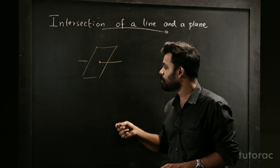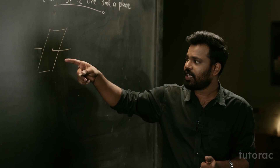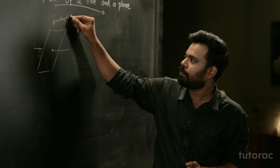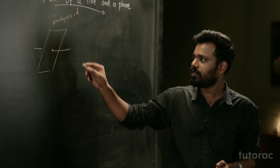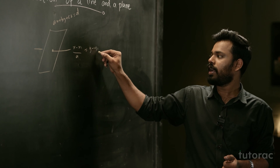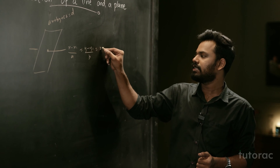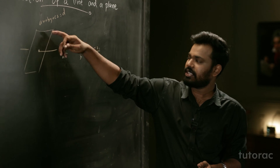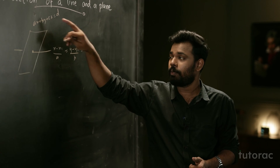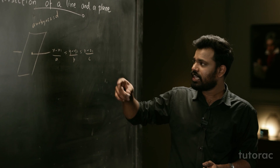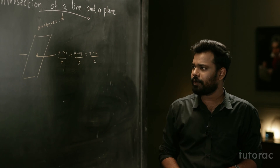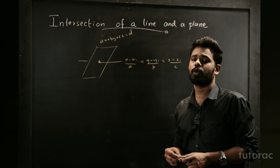Now what is this point? That is what we have to find out. For that we need the equation of the plane — let it be AX plus BY plus CZ equals D — and the equation of the line: X minus X1 by A equals Y minus Y1 by B equals Z minus Z1 by C. Note that the ABC in the plane equation and the ABC in the line equation are different: the line's ABC is its direction ratio, while the plane's ABC is the direction ratio of the normal to the plane. Using these two we can easily find the point of intersection, and we will do that with the help of a question.